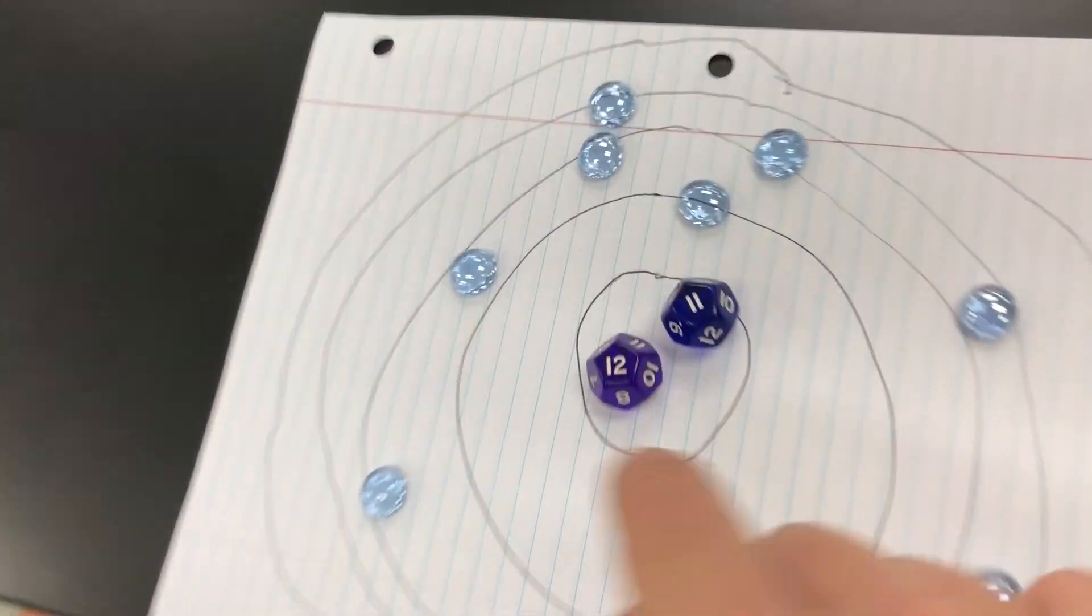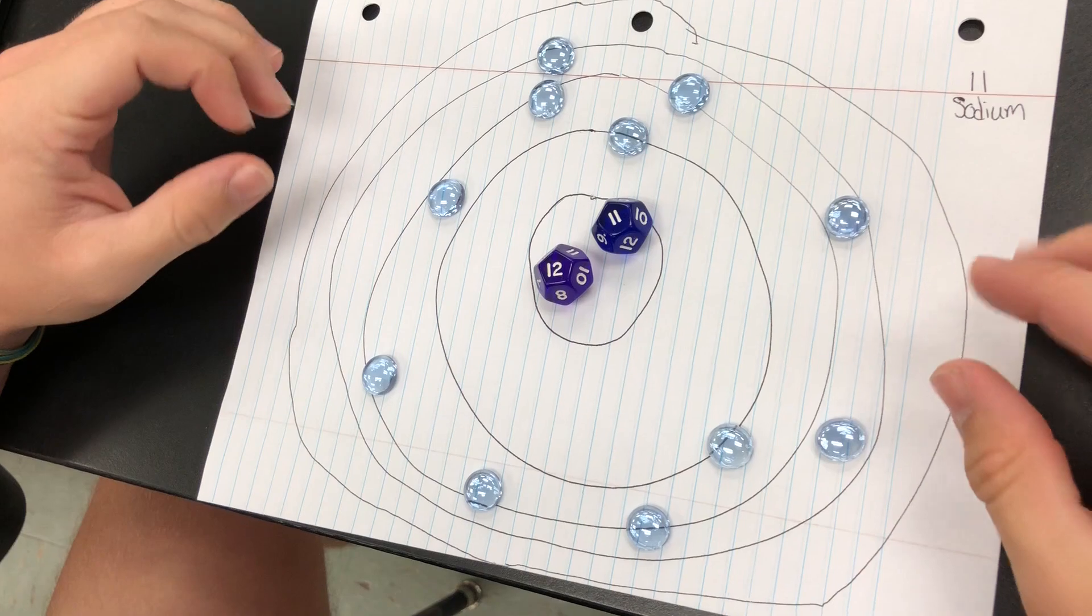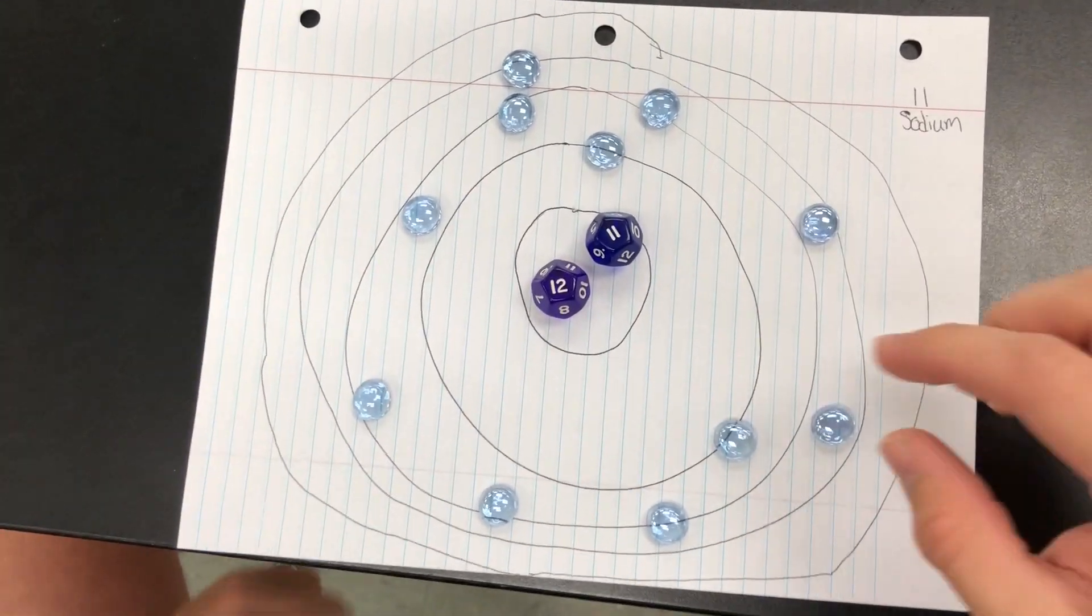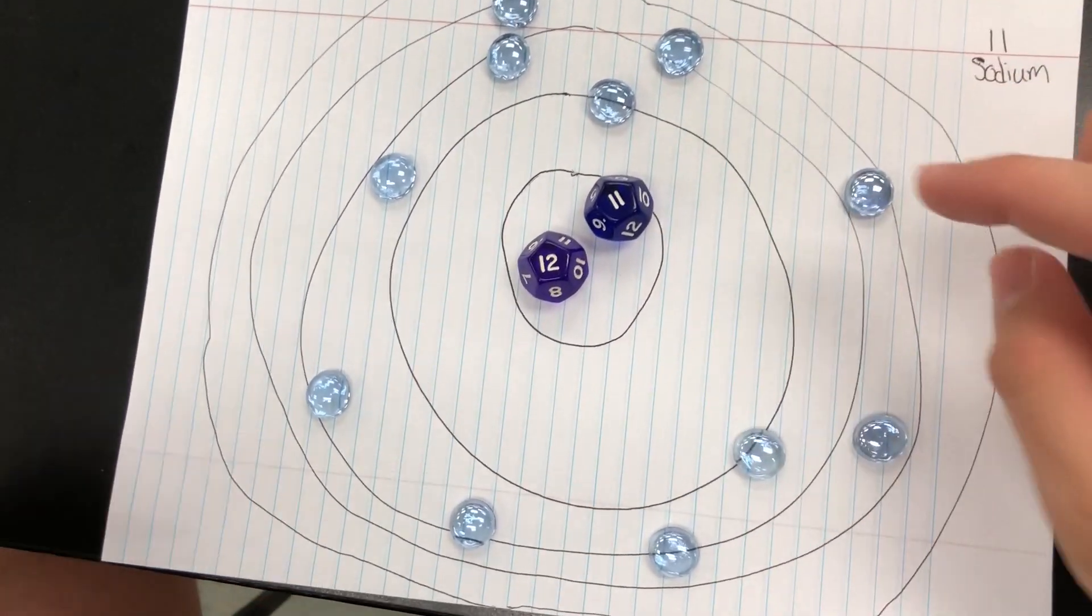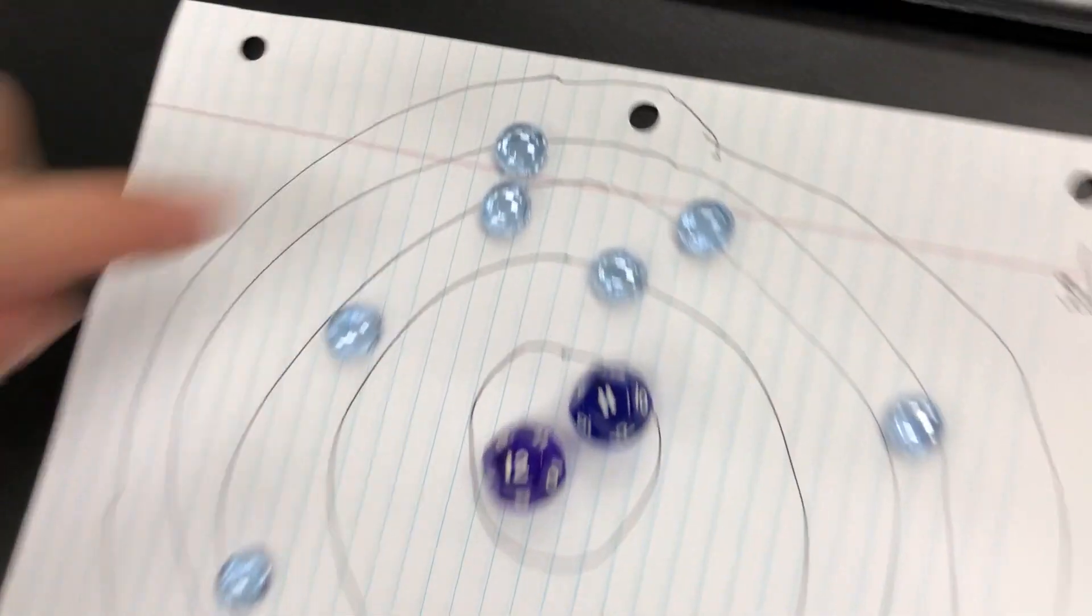We got 11 protons right here, 12 neutrons, and then we got our electrons out here in the electron clouds. You can only have two in the first one and then you can have eight in the second one, so I got them out there. I got one left over, so I got it out here for my valence electron.